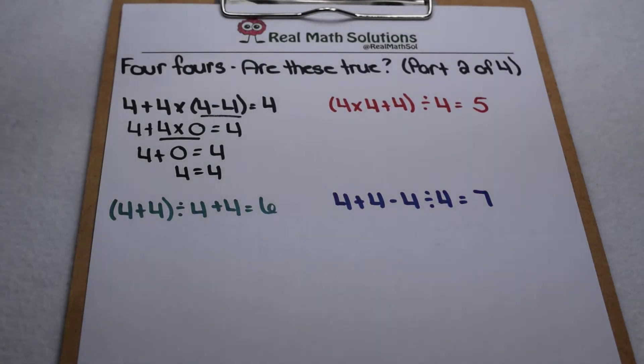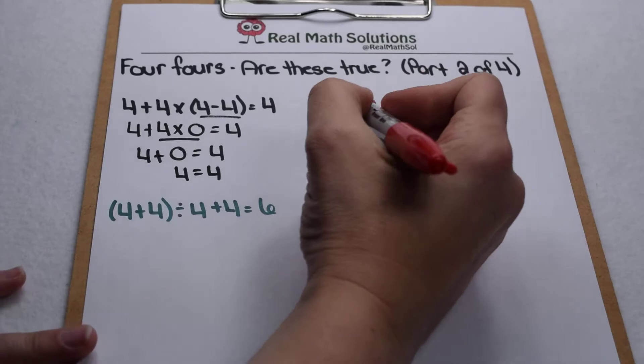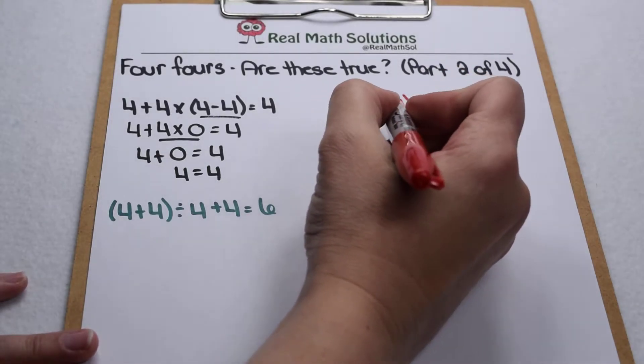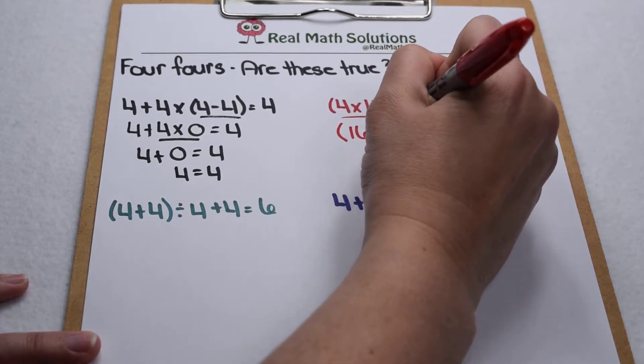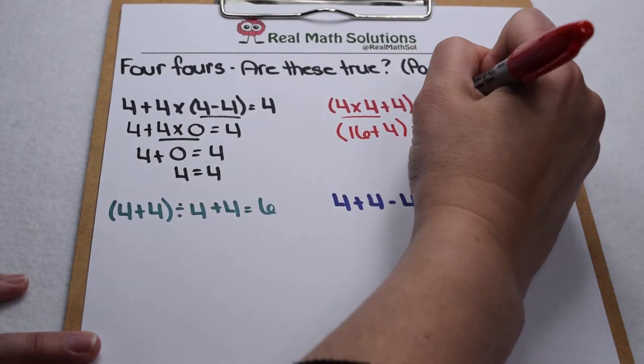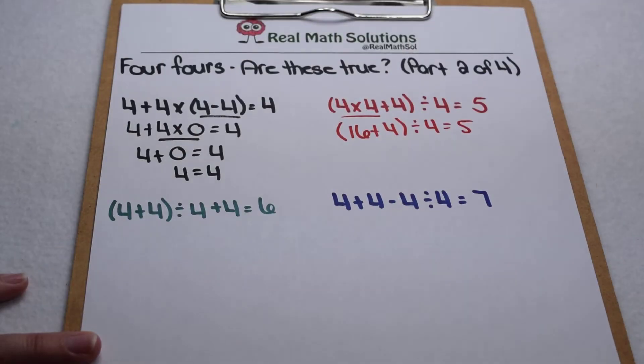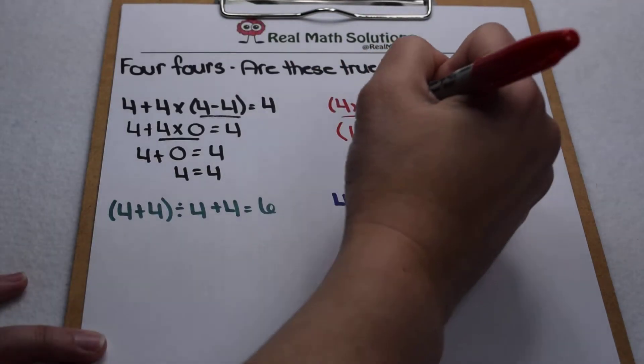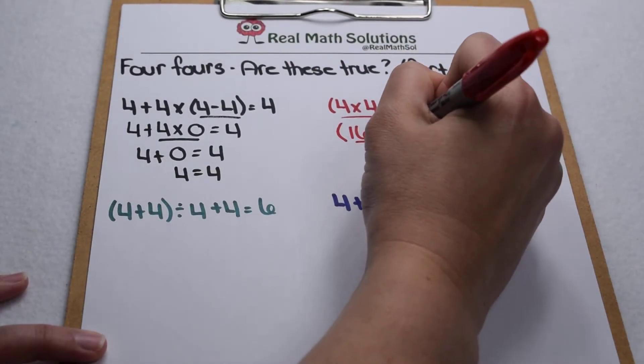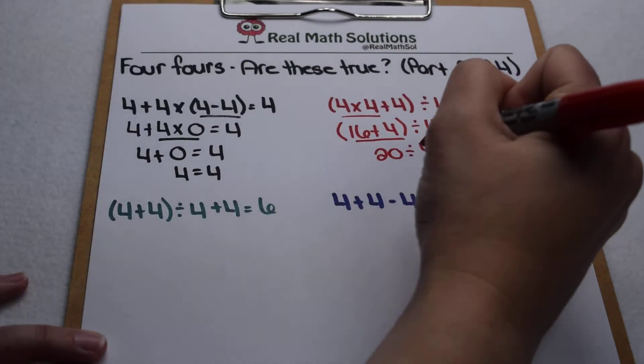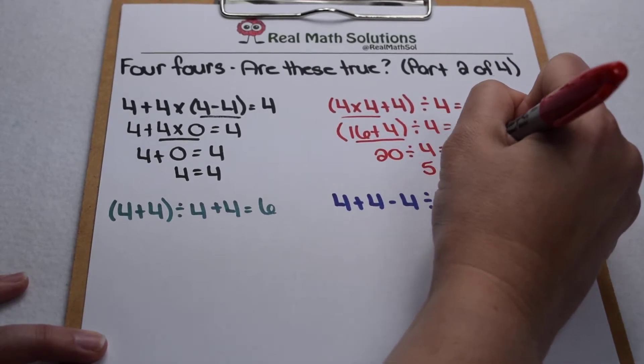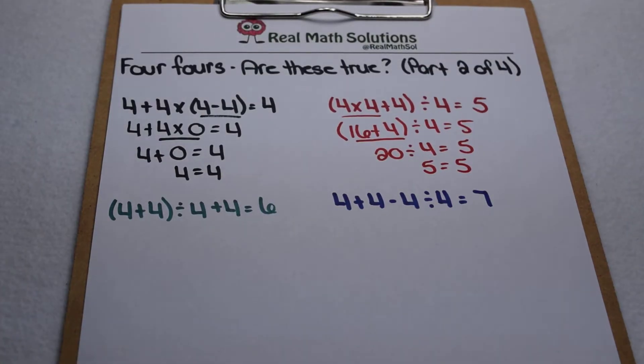Let's check our next one to see if we get a result of 5. Inside our parentheses we have 4 times 4 plus 4. Well, multiplication comes first. So we have 16 plus 4 still inside our parentheses divided by 4. We have to finish off inside our parentheses. So 16 plus 4 is 20. So 20 divided by 4 to give us 5, and sure enough 20 divided by 4 does give us 5. So 5 equals 5 and that one also works.